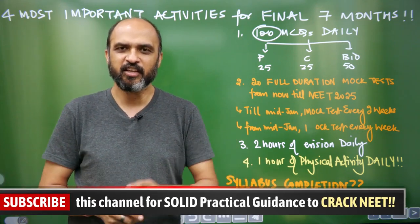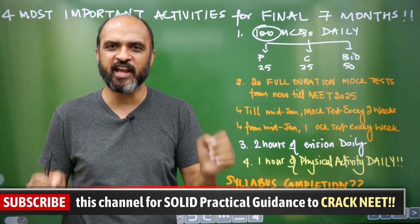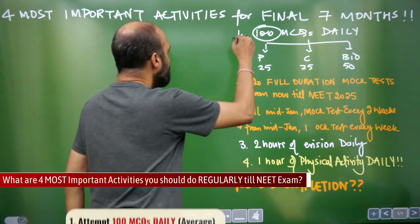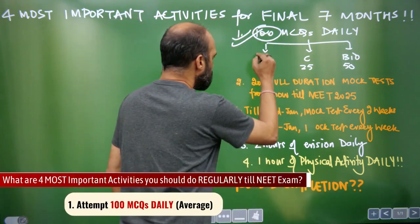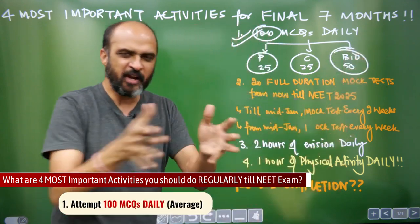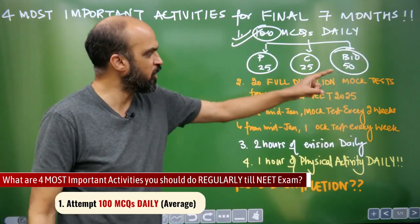But important thing is, you remember four things for next seven months. First, 100 MCQs daily: Physics 25, Chemistry 25, Bio 50. Maintain a balance between Physics, Chemistry and Bio.